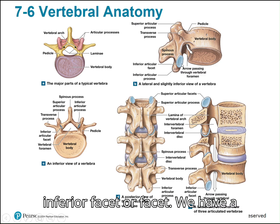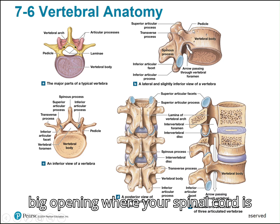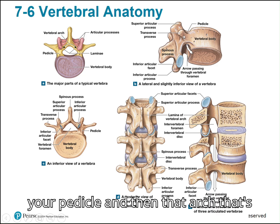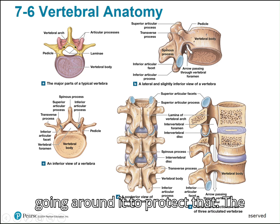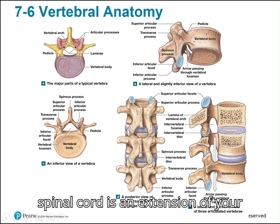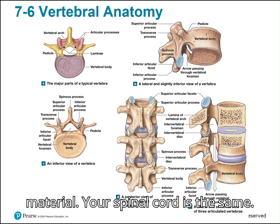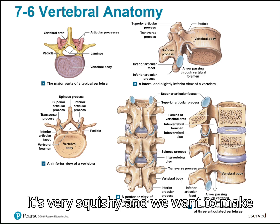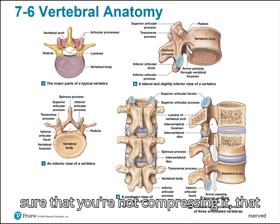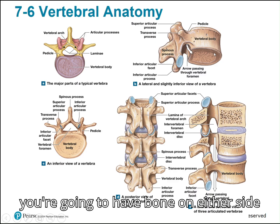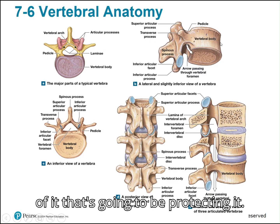There's a big opening where your spinal cord passes through, protected by the vertebral arch made up of the pedicle and the arch going around it. The spinal cord is an extension of your brain — it's very squishy material, just like the brain — so we want to make sure it's not being compressed or damaged. That's why bone on either side protects it.